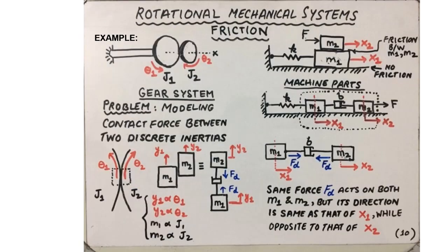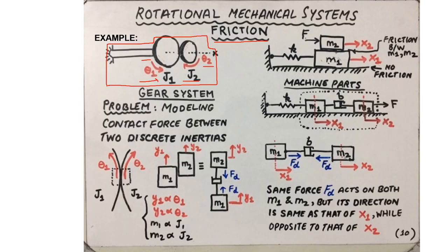The next example is a gear system, which illustrates how to model friction between meshed gears. In the diagram, two gears are meshed together with corresponding mass moments of inertia J1 and J2, and rotations theta_1 and theta_2 in opposite directions — if one gear rotates counterclockwise, the other rotates clockwise. The main objective is to learn how to model the frictional interaction when two discrete inertias come into contact.